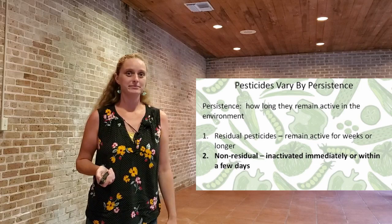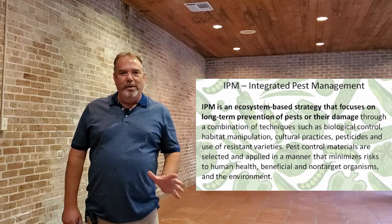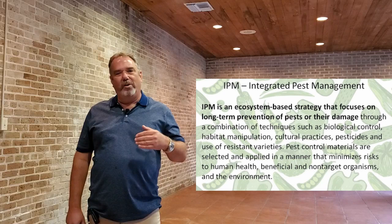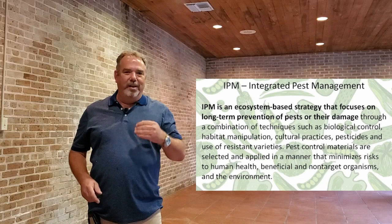Now we're going to talk about why you don't necessarily need to use a pesticide and cover other options first. One concept we throw around in the industry a lot is IPM — Integrated Pest Management. The IPM system is an eco-based strategy focused on long-term prevention of pests and their damage. We're looking not just at one plant but at the overall garden — the whole picture — making sure the whole system is taken care of.